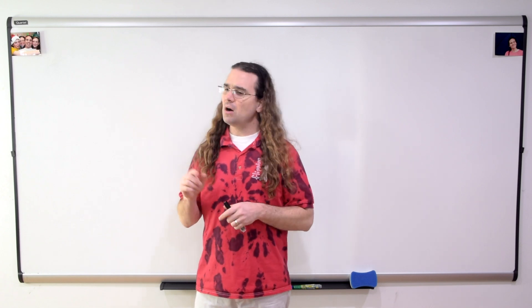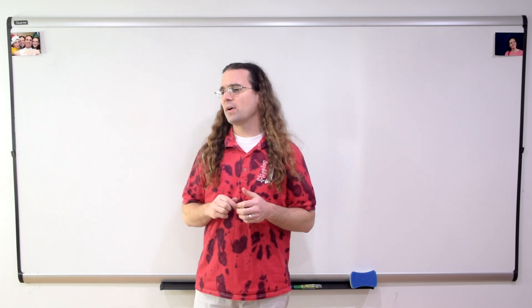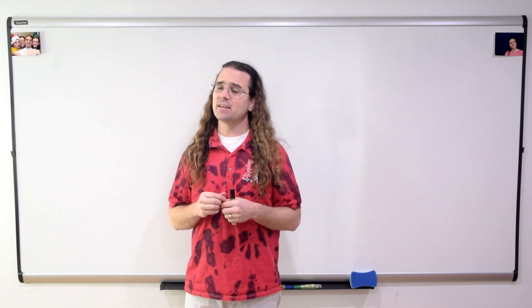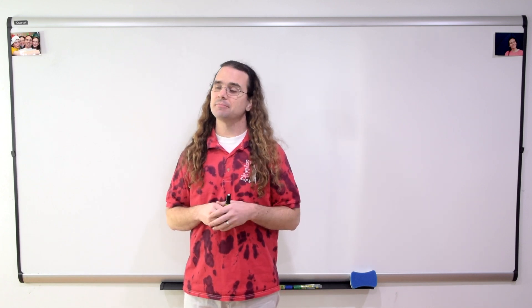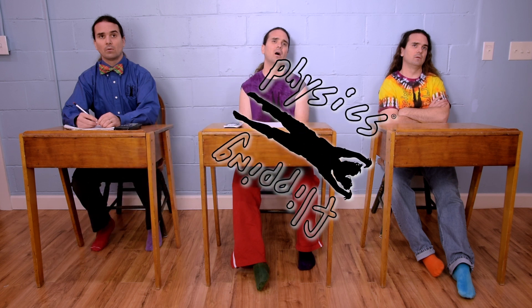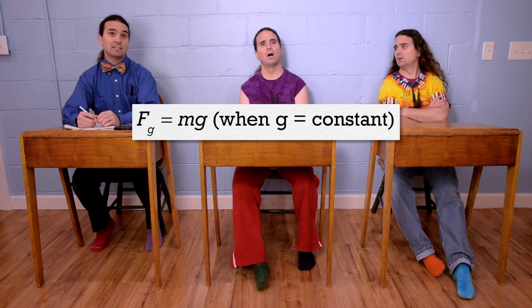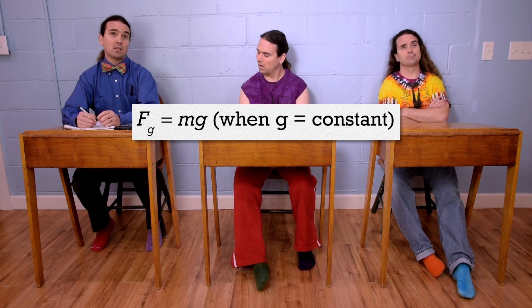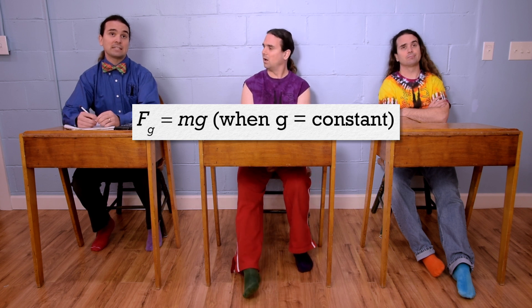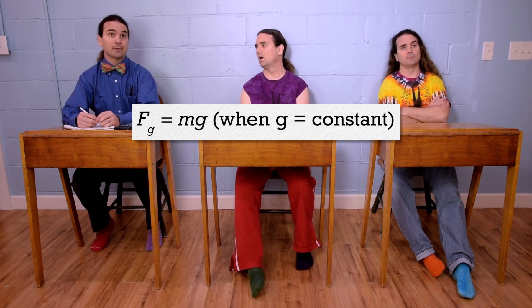Good morning. Bo, what are the two equations we have for the force of gravity acting on an object? Flippin' physics! Well, we have force of gravity equals mass times acceleration due to gravity, which we can use when the acceleration due to gravity is constant, like on the surface of the Earth, where the acceleration due to gravity is 9.81 meters per second squared.